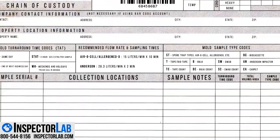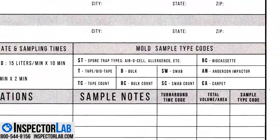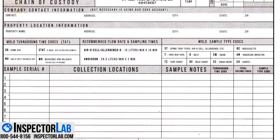The property location information must include an address, city, state, and zip code, indicating where the samples were collected. A property name is not essential, but if you want it on the mold report it should be entered on the chain of custody. If you have completed appointment information on the ISN, Recall Check, Inspector Lab, or any of the other Inspector Services Group websites, property details will automatically be populated in the property location information when it is logged into the laboratory for analysis.